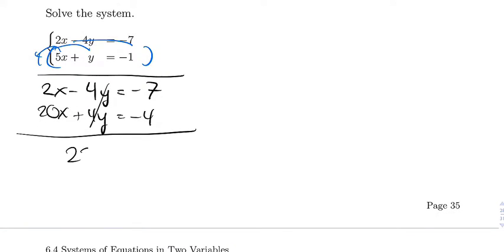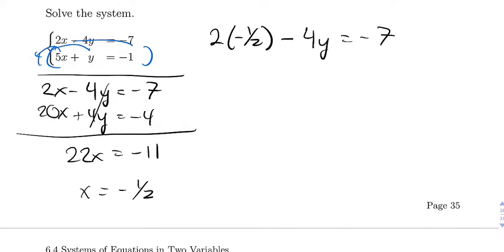So then x equals negative 1 half. Now I'll plug this into the first equation. So we have 2 times negative 1 half minus 4y equals negative 7. So that's going to be negative 1 minus 4y equals negative 7. Negative 4y equals negative 6, so then y equals 3 by 2.